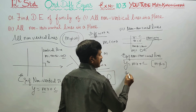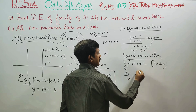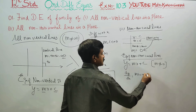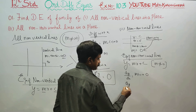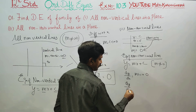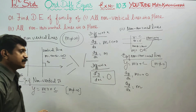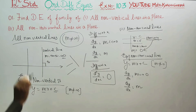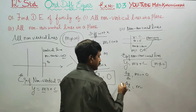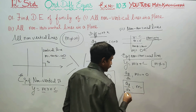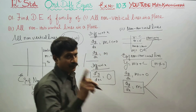Now, differentiating with respect to x gives dy/dx equals m. Since m is not equal to 0 and not equal to infinity, this sum can be done in two ways.